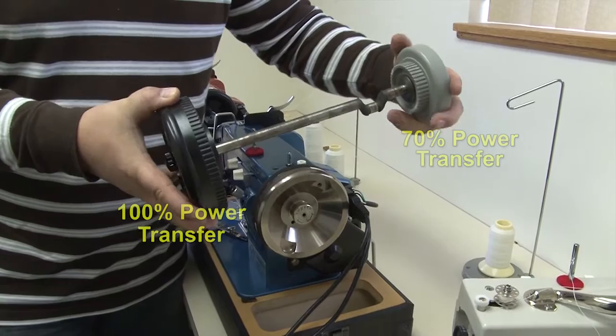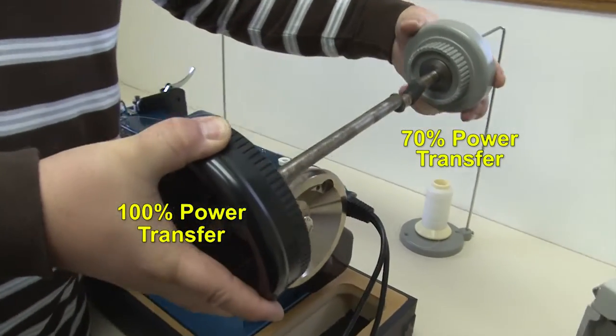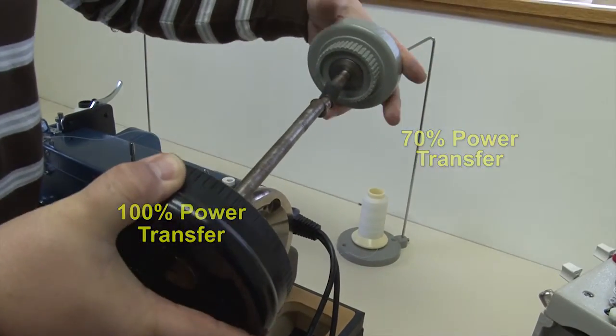Now when we grasp hold of that, notice which one slips. It's the friction clutch knob system.